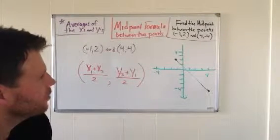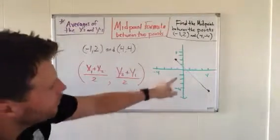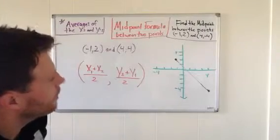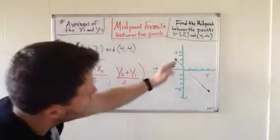It says find the midpoint between the points (-1, 2) and (4, -4). I went ahead and graphed that over here for you. And it's important we connect a line because what we're really looking for is that midpoint.